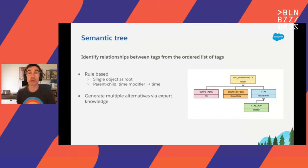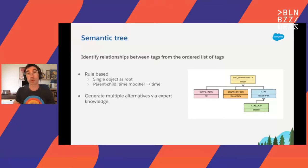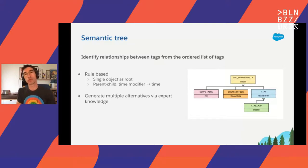The semantic tree: the NER outputs a list of entities, but there is no structure. This list of tags from NER is transformed into a tree where a record type is the root. We fold the parent-child relation. For example, we group the time concept "last quarter" with a time qualifier that corresponds to the field "close date" in our data structure. During this step, we can also generate multiple alternatives and we have a ranking mechanism to rank them.